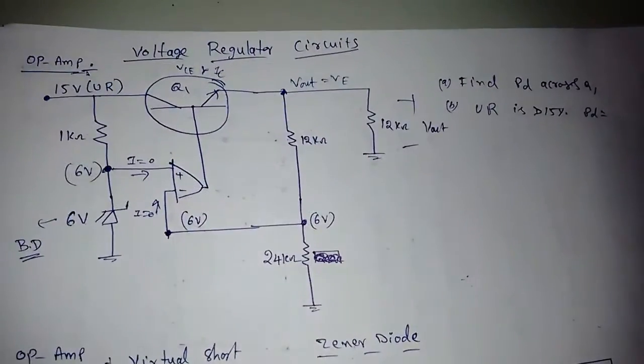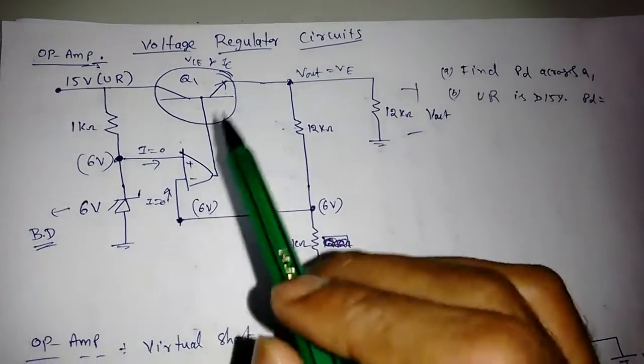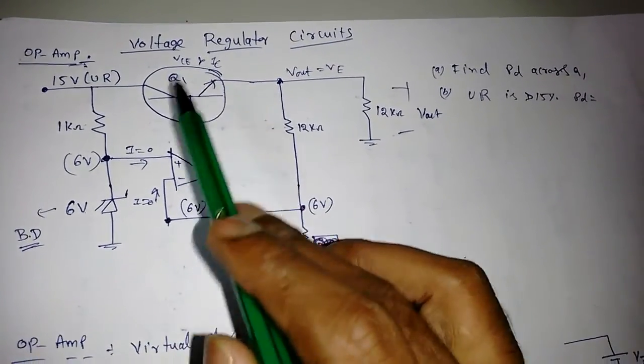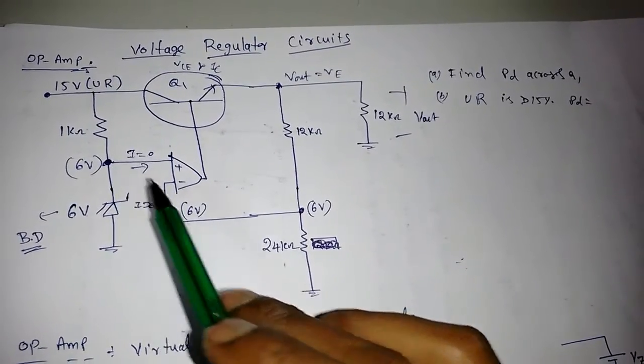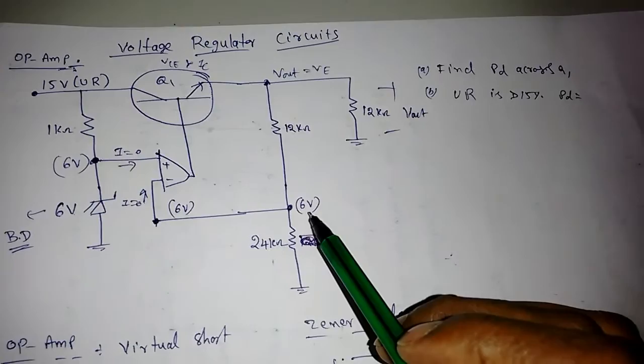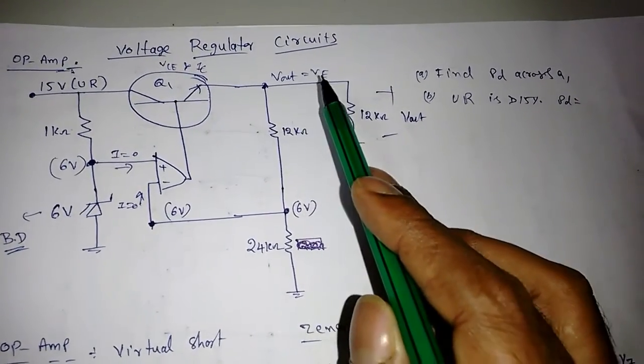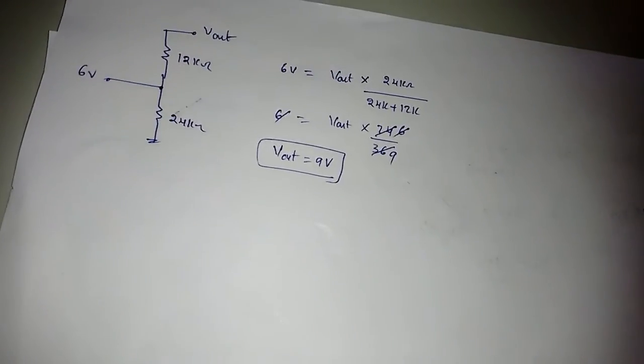It's a continuation of the previous lecture. We are finding the IC and VCE of this transistor. We found already this was 6 volts passing to the negative terminal. Now we need to find Vout here, which is equal to V. If you draw this circuit...